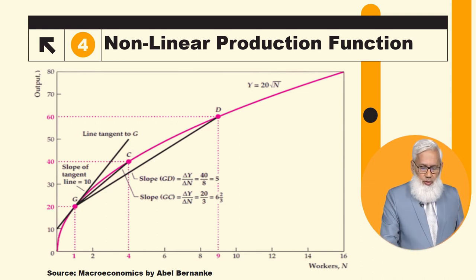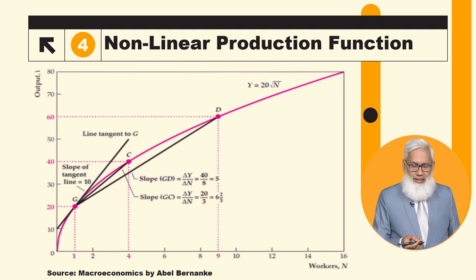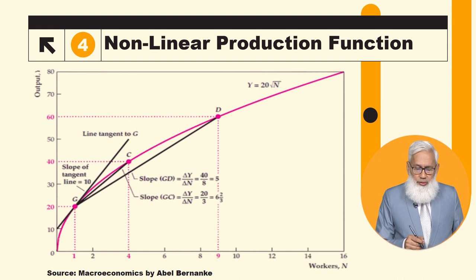The slope of this tangent line is actually giving us the value of rate of change, instantaneous rate of change. Technically this is the instantaneous rate of change that at very very near close neighborhood of point G.